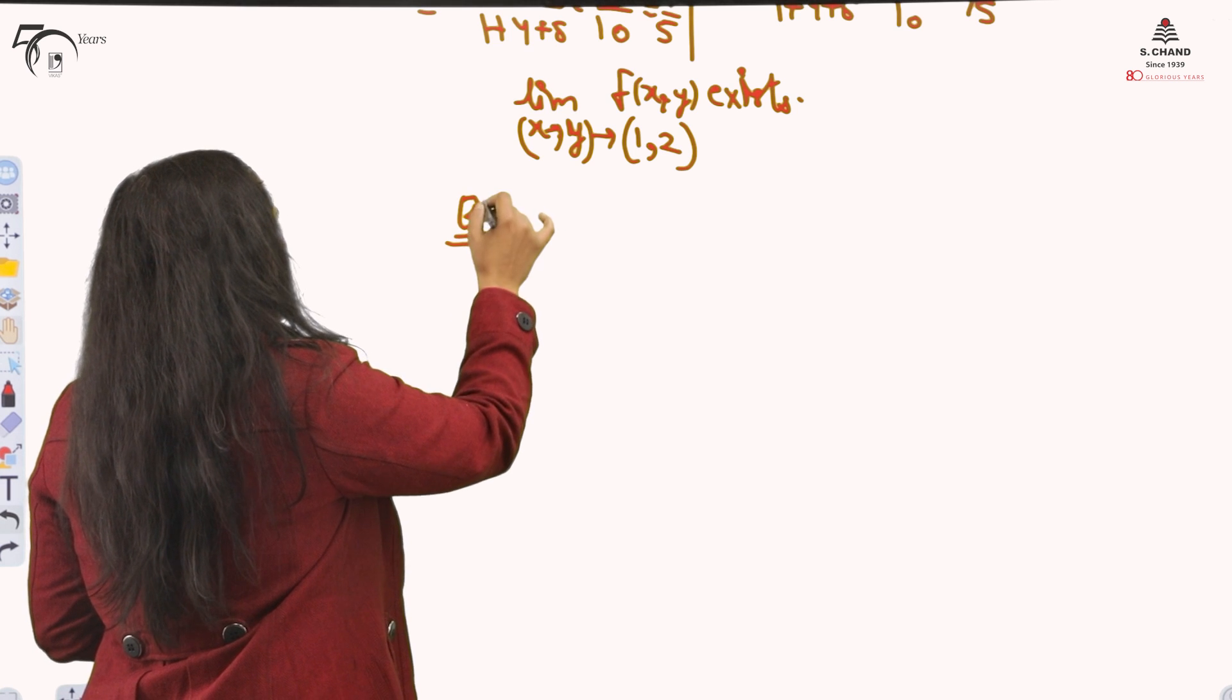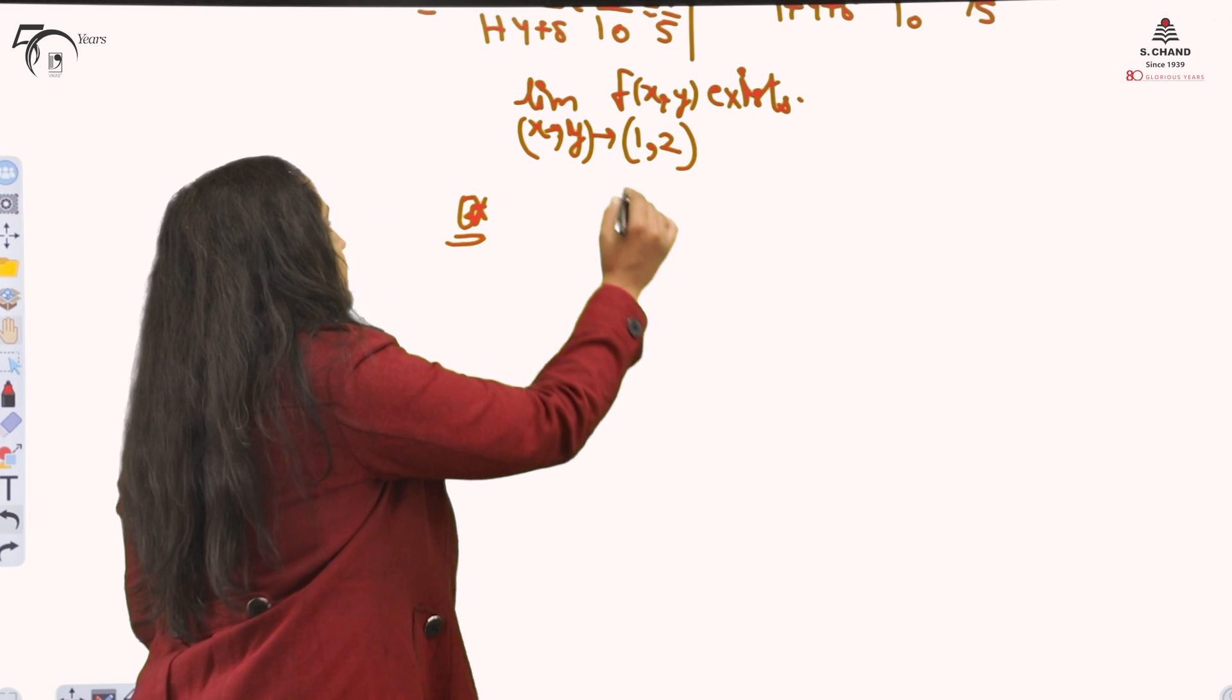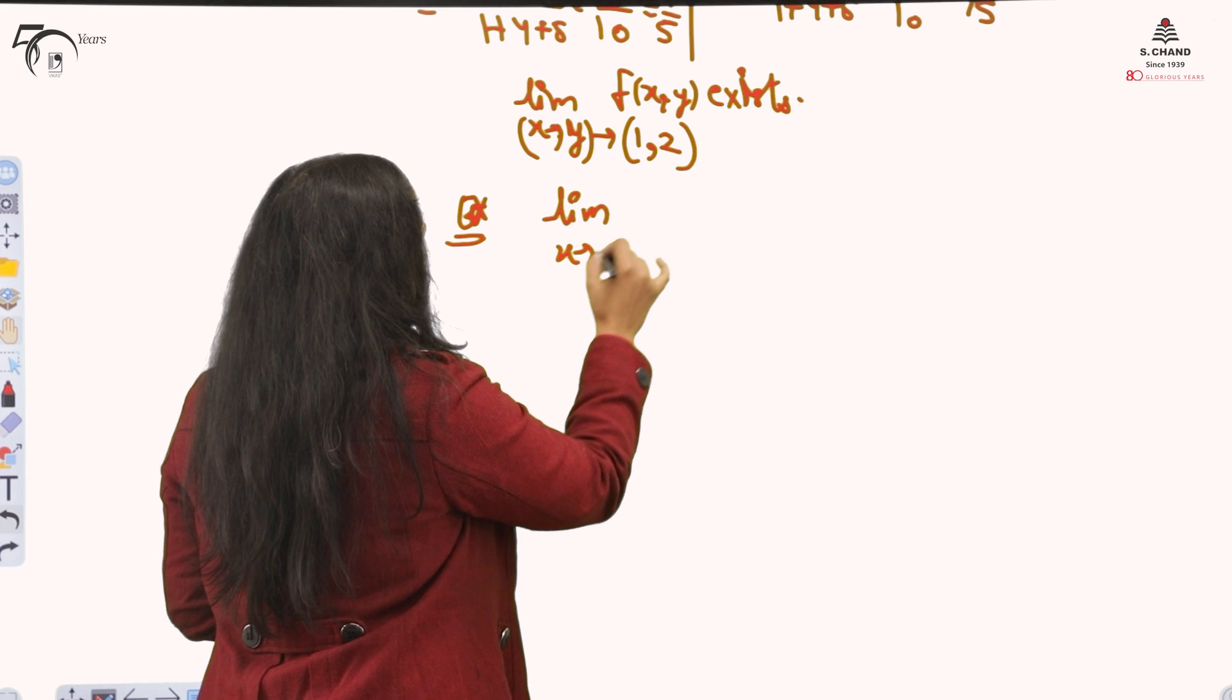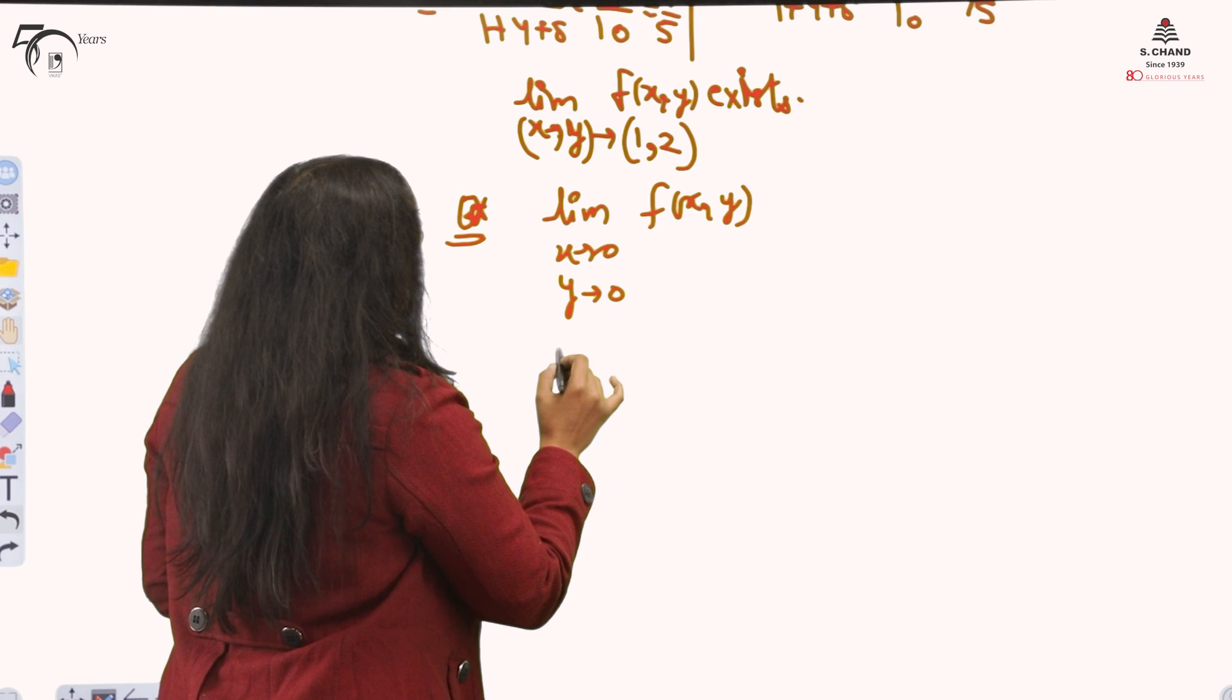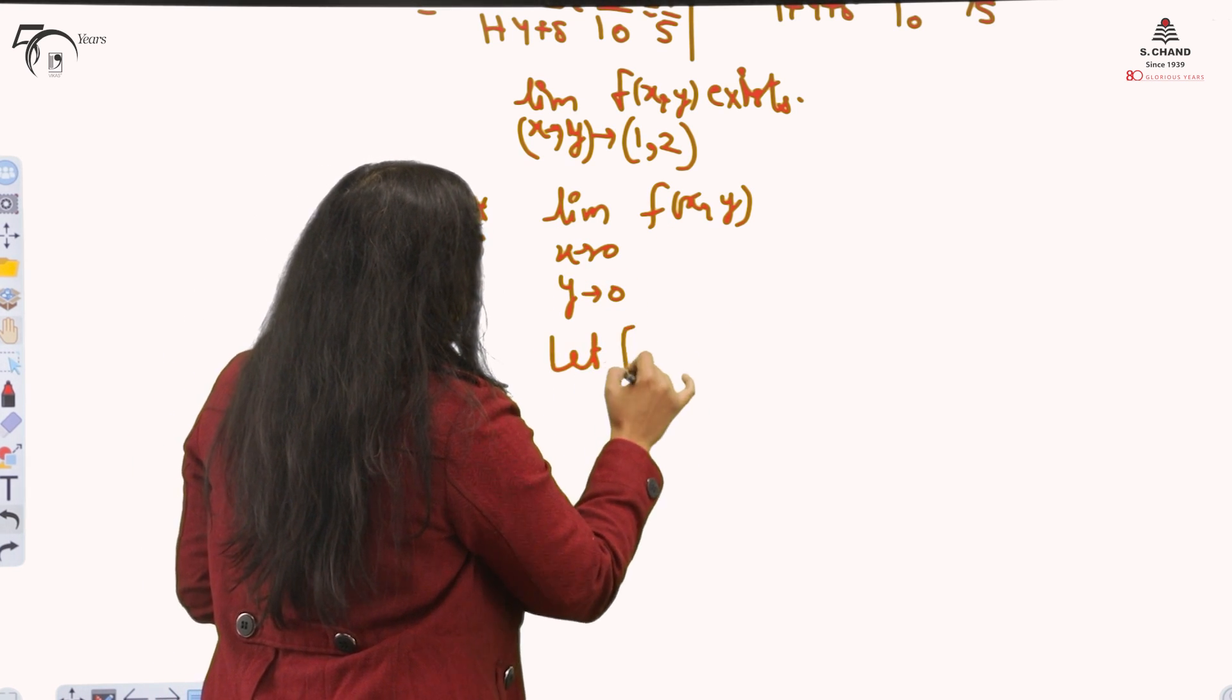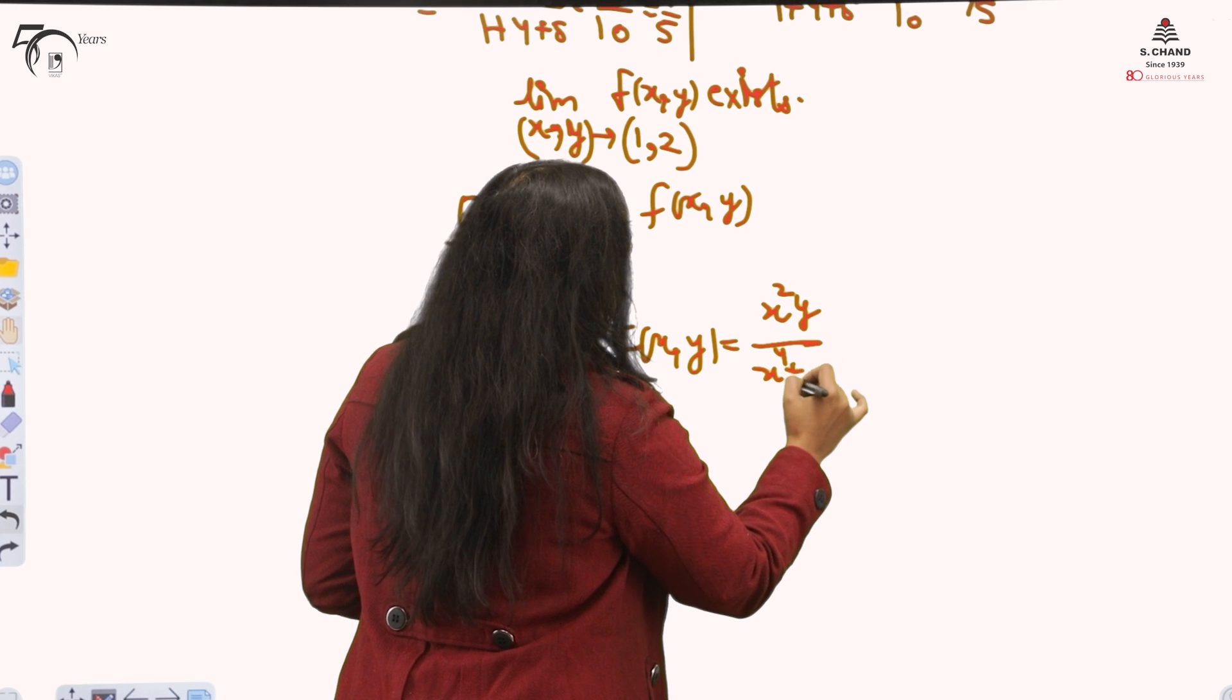The next example is, because this was non-zero number, we were easily putting the values and we got the limits. Now if the point is (0,0). Then how to do it? If the point is (0,0). I am just taking let f(x,y) is x²y/(x⁴ + y²).